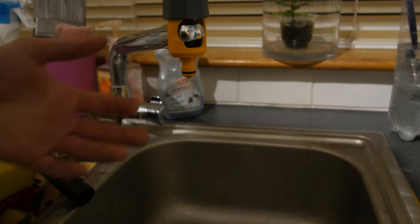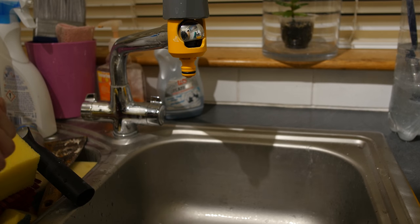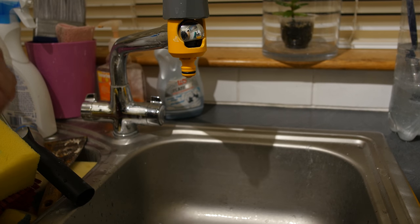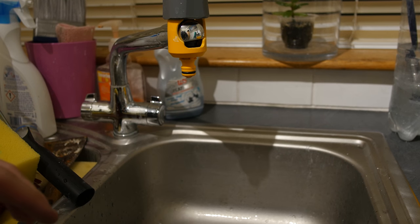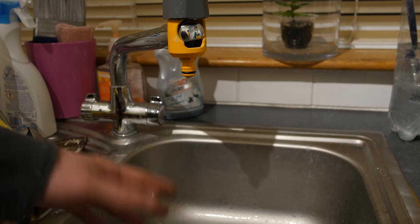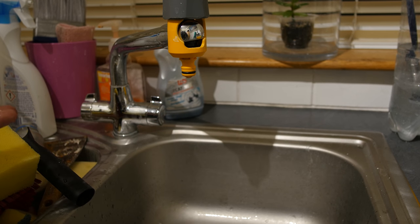You just use the remjet remover solution before you develop, and then you take the film out after you've fixed. After you've done the fixed bath, you take the film out and then you just give it a gentle rub under running water. Then whatever small amount of remjet that's left just comes straight off.